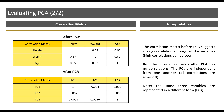Remember that the same three variables — height, weight, and age — are just represented in different forms, that is, principal components: PC1, PC2, and PC3.